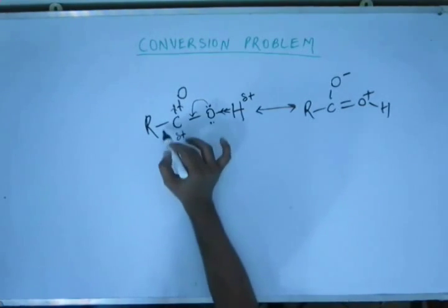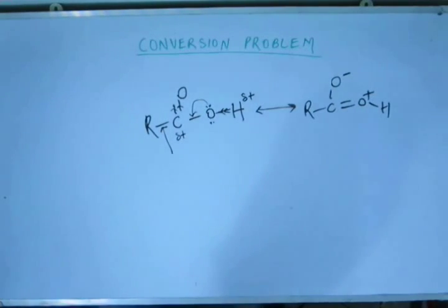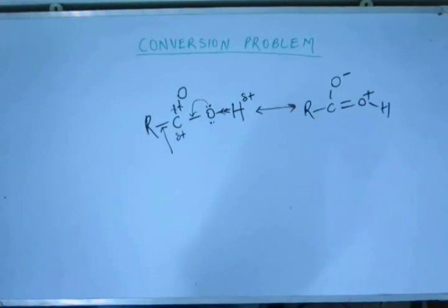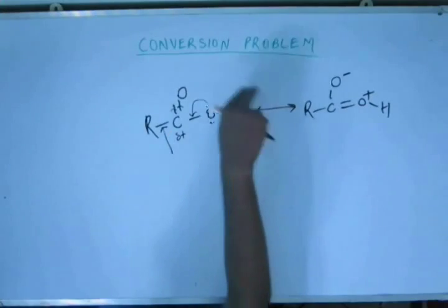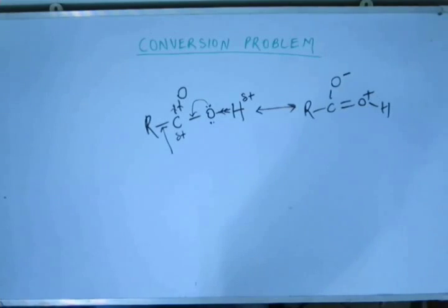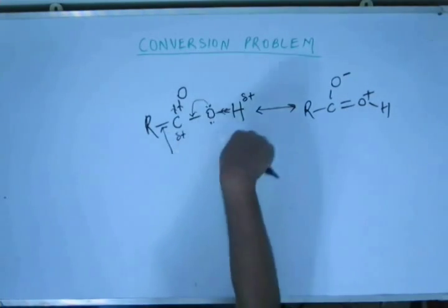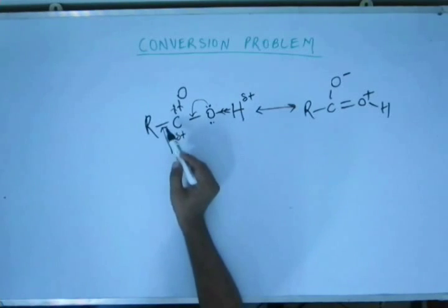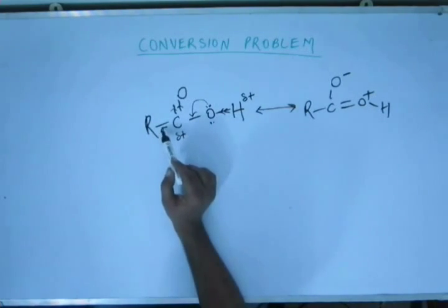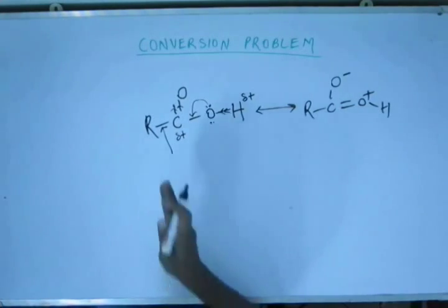Another reactive site is this R-C bond. As we have seen in decarboxylation, CO2 is removed and you have a negative charge on this carbon. So we can have another reaction in which the whole carboxyl group participates and leaves the substrate, breaking this bond and consequently forming a negative charge on the carbon. So this bond is again a reactive site, and we will see reactions at this site as well.